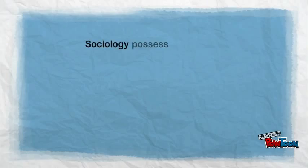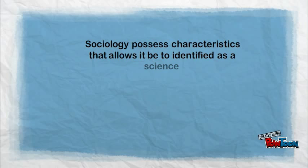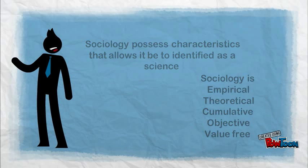Sociology possesses characteristics that allow it to be identified as a science. It is empirical, theoretical, cumulative, objective, and value-free.